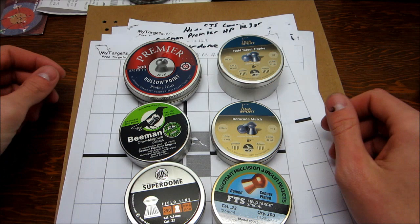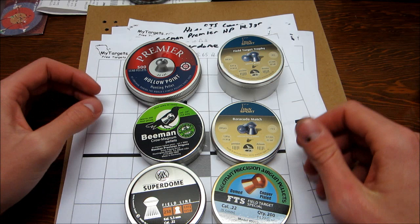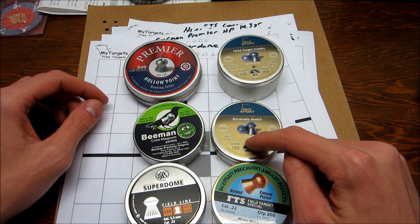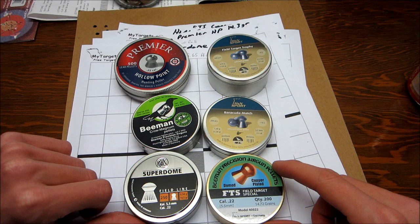Alright, we're trying to see which pellet works best in the Benjamin Trail NP. These are the ones that I've shot today: the Crossman Premieres, H&N Field Target Trophy, H&N Barracuda Match, Beeman Crow Magnum, RWS Superdome, and the Beeman Field Target Special that are copper-plated.